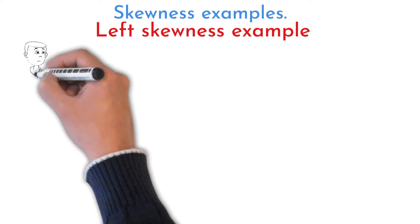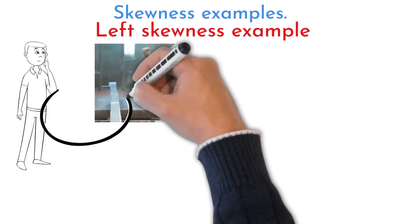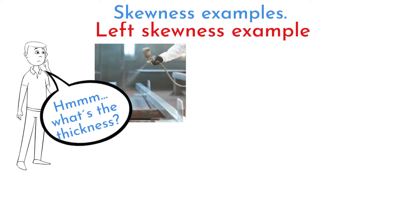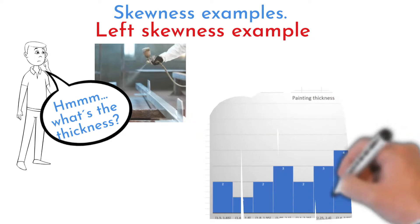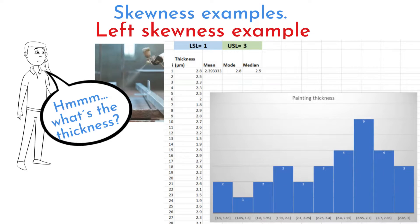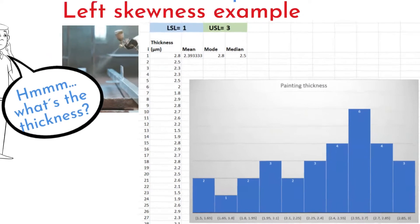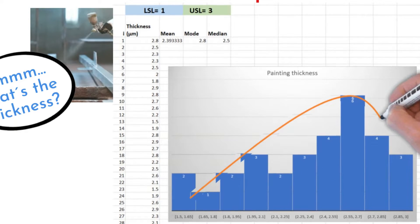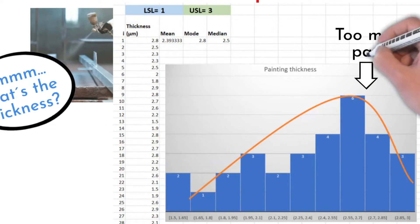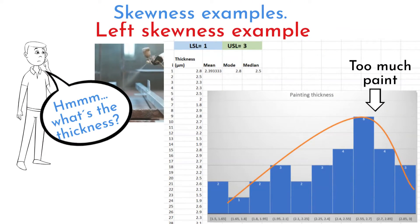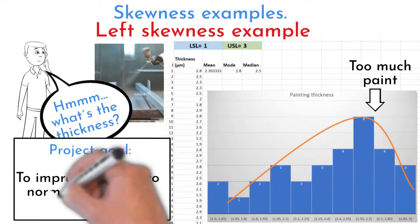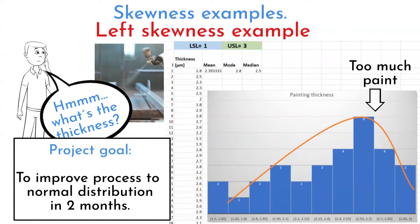Painting process engineer would like to know thickness of painted area. It is critical for future parts usage. Thickness measured on 30 samples showed left skewed distribution. Thickness is in micrometers. This means that there is too much paint on most of the exits from painting room. That can cause that defect part will leave this process. This triggered action to bring thickness to have normal distribution. Process then can be more under control.